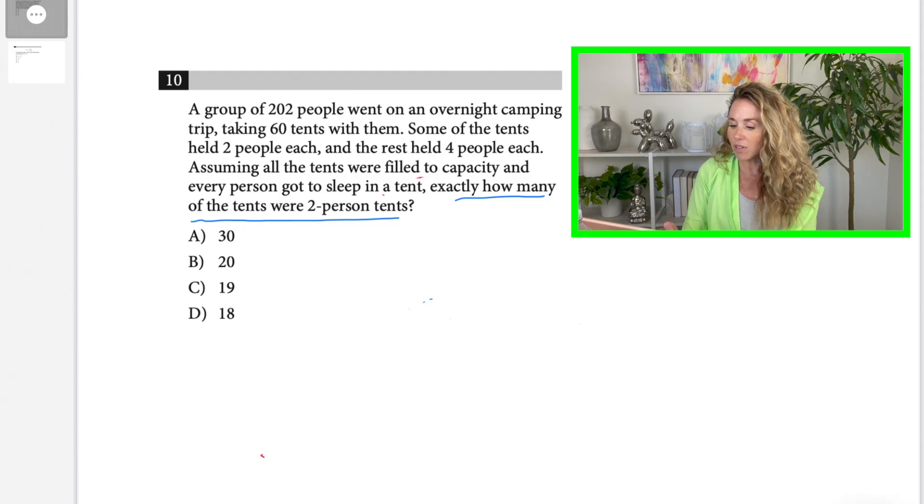So now I'm going to start with the answer choices. And here's a tip for you. Start with a middle answer choice. If you start with 30, then if it's too big you've got to go to 20. If it's too big you have to go to 19. So you might have to test three answers until you get to the right answer. But if you start with a middle number, you'll only have to test one or two.